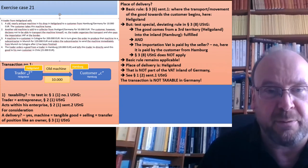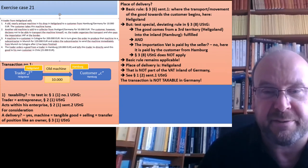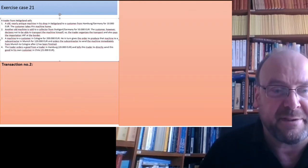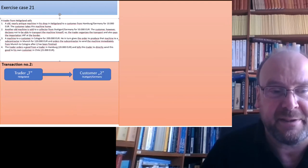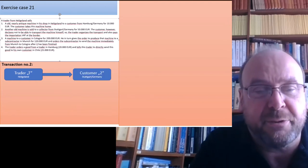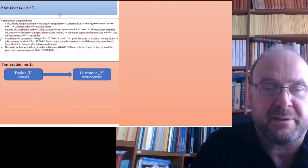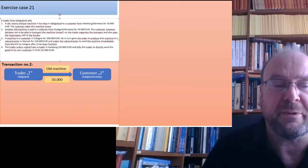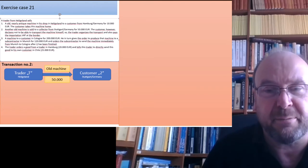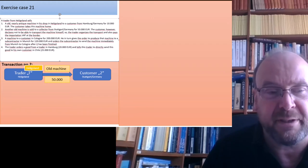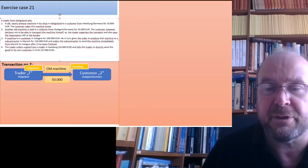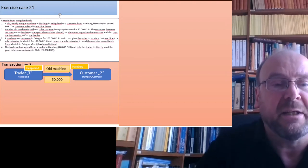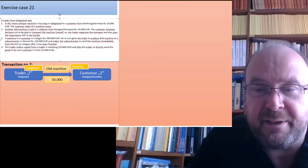On to transaction number two. Trader T in Heligoland sells to customer C2 in Stuttgart, south of Germany. What is sold is an old machine for a price of 50,000. The good goes from Heligoland to Stuttgart. Taxability to test is §1(1) Nr.1 UStG. Trader T is an entrepreneur, acts within the scope of his enterprise, demands a consideration. The remarkable requirements are again the two last ones.